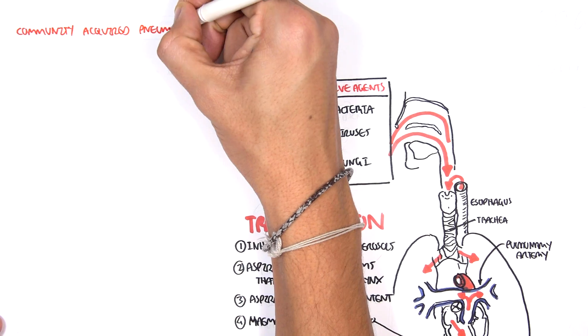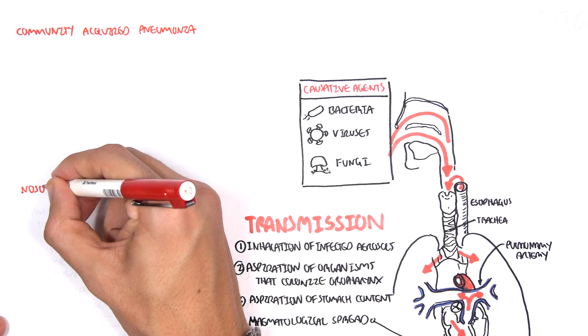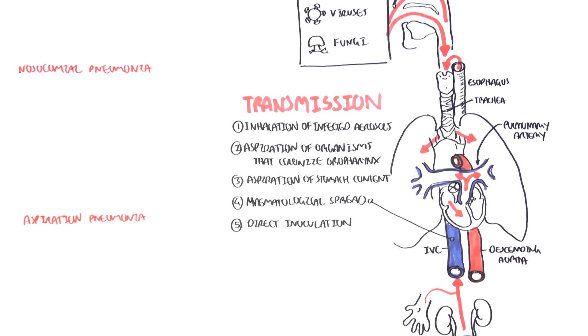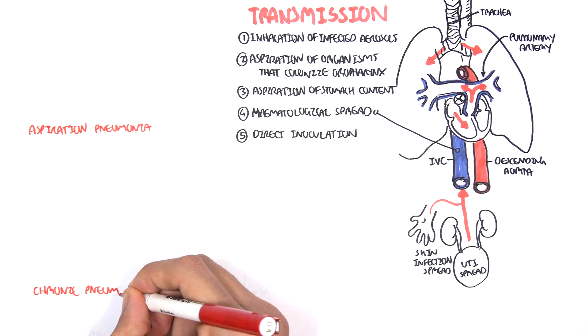So the types of pneumonia that we will look at as well as its causative agents are the community acquired pneumonia, nosocomial pneumonia, aspiration pneumonia and chronic pneumonia.